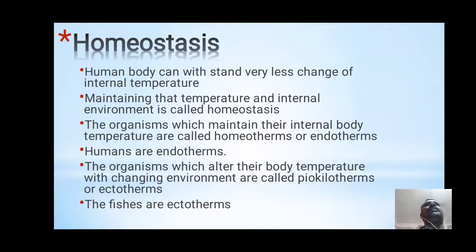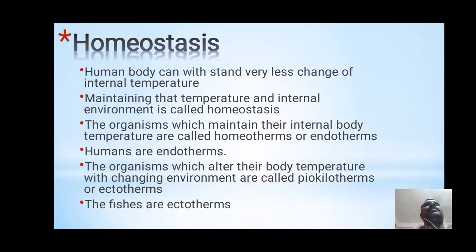Let us deal with the definition of homeostasis. It is a basic part of physiology. The human body can withstand very little change in internal body temperature. Maintaining that temperature and internal environment is called homeostasis. Organisms which can maintain their internal body temperature are called homeotherms or endotherms — humans are endotherms. Organisms which alter their body temperature with the changing environment are called poikilotherms or ectotherms — fish are ectotherms.